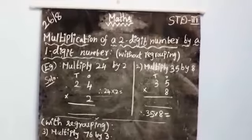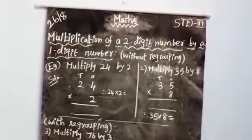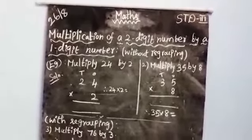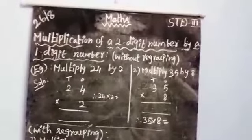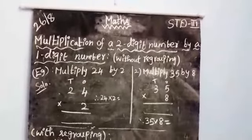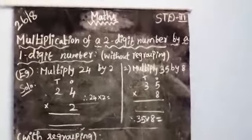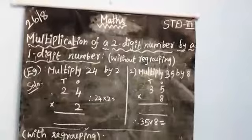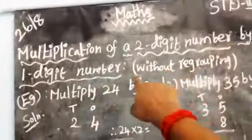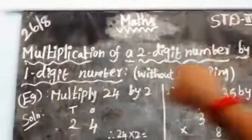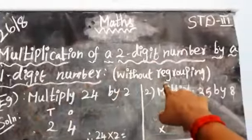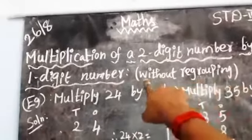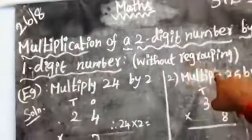Good morning students. In the previous class we studied about multiplication of one-digit numbers. Today we are going to learn the multiplication of two-digit numbers by one-digit numbers — two-digit number by a one-digit number without regrouping.